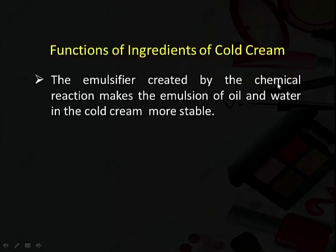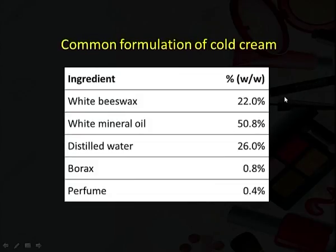The emulsifier created by this chemical reaction makes the emulsion of oil and water in cold cream more stable. To repeat: borax dissolved in water forms sodium hydroxide and boric acid; sodium hydroxide reacts with cerotic acid present in beeswax, forming the sodium salt of that long-chain fatty acid, which acts like soap and helps in emulsification. Boric acid acts as a buffer. A common cold cream formulation is about 22% beeswax, 50% white mineral oil, 26% distilled water, 0.8% borax, and then perfume is added.